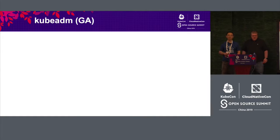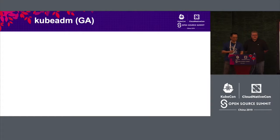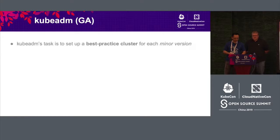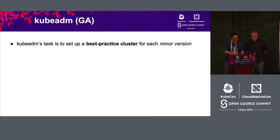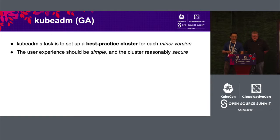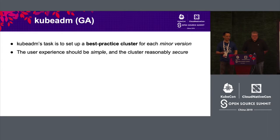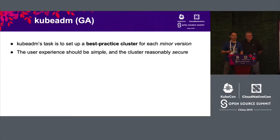The first is KubeADM. As everybody knows, KubeADM went GA since 1.13. It is a best-practice tool to help you bring up a minimum conformance Kubernetes cluster. The user experience is very simple and the cluster is designed to be as secure as possible. Security is a very tough topic, and we are going to continue improving it in the next few releases. If you're interested, please get involved — we welcome all contributions.